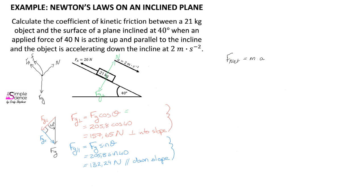Since we have calculated the perpendicular component of gravity, we already know the normal force acting on the object. There are only three forces acting in the parallel plane: the parallel component of gravity pulling the object down the slope, the frictional force opposing the motion, and the applied force opposing the motion. The net force equals all forces acting down the slope — fg parallel — minus the forces acting up the slope — friction and the applied force — and this must equal mass multiplied by acceleration.